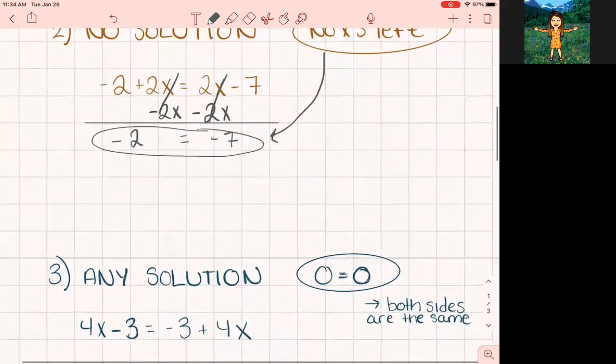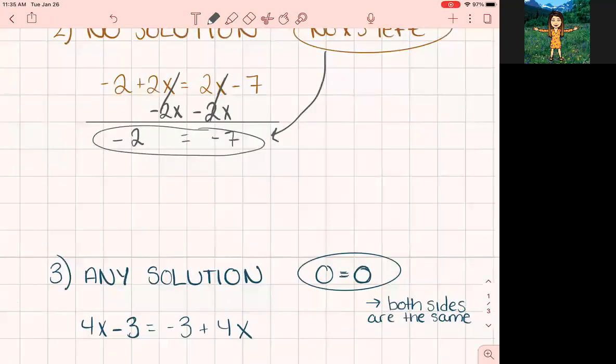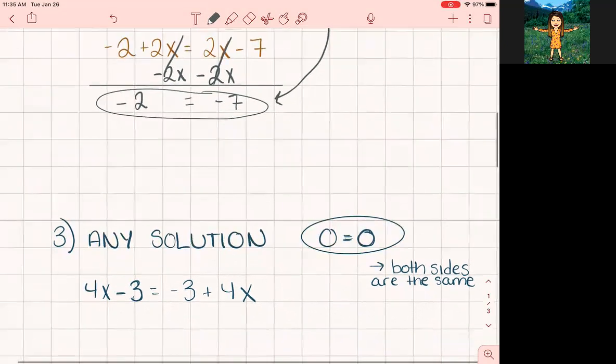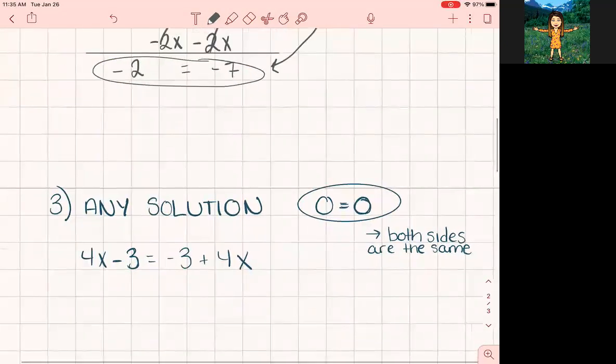So what any solutions means is x could be any number, it could be every single number, and your left will always equal your right. And what this looks like when you're done solving is you'll actually end up with 0 equals 0. So if we were to solve this one, go ahead and solve it and see what happens.